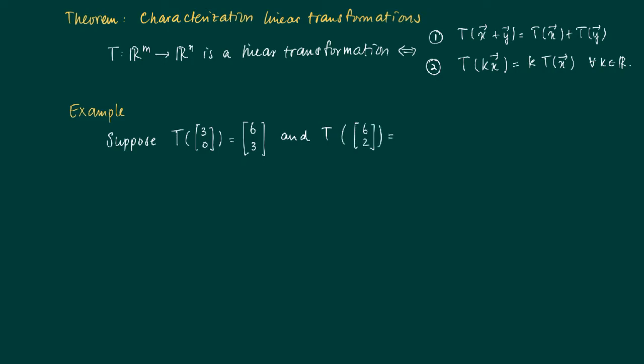and that the image of [6,2] equals vector [10,8]. So we may conclude that T is mapping from R^2 to R^2. Now determine the matrix A such that T of X is A times X, if T is linear.